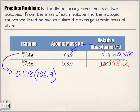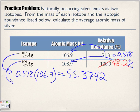The first isotope calculation gives us 55.3742. Okay, this bottom one, we have 0.482 as a decimal and we're going to multiply it by 108.9.